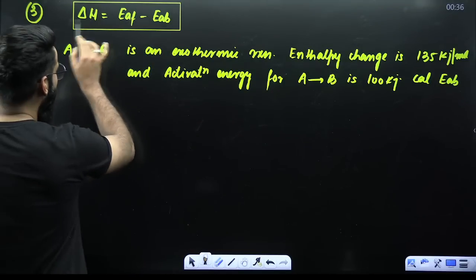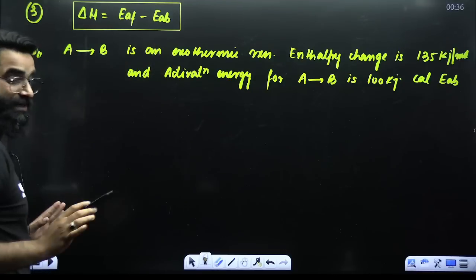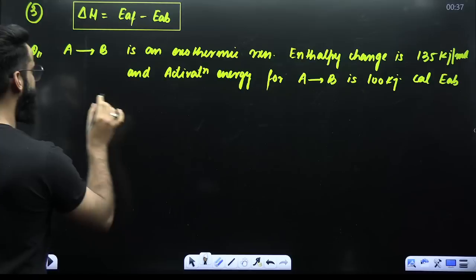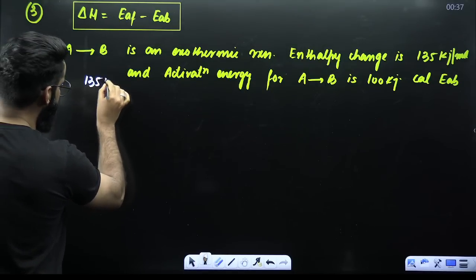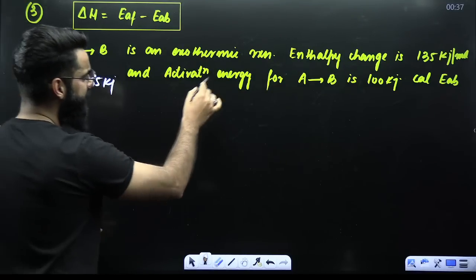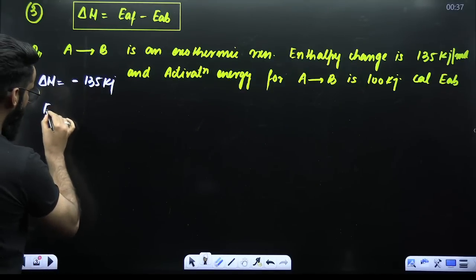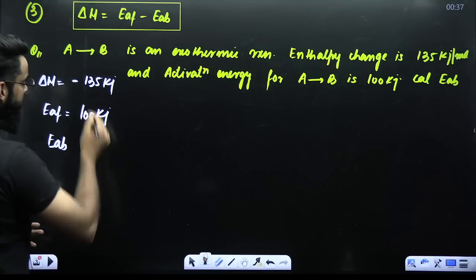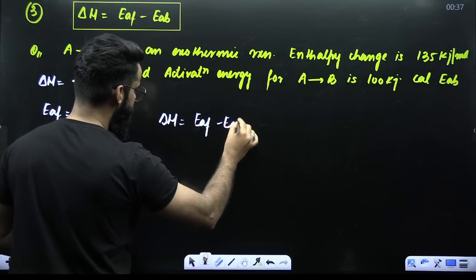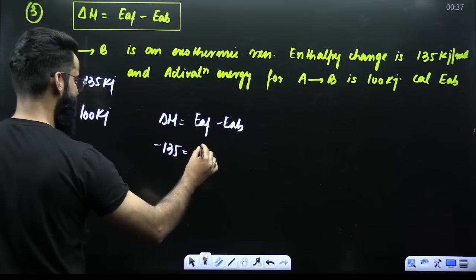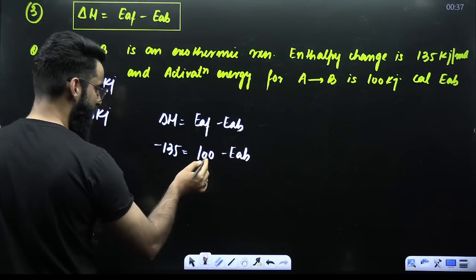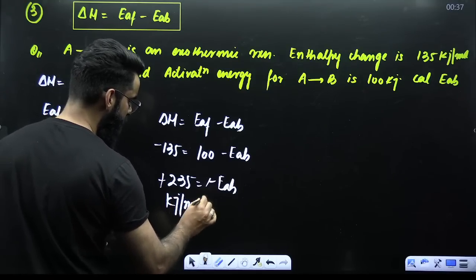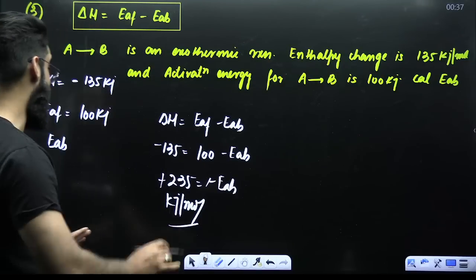Concept 3: enthalpy change is always equal to activation energy of forward reaction minus activation energy of backward reaction. For example, given an exothermic reaction with enthalpy change of 135 kilojoules — since exothermic, delta H is −135 kJ. Activation energy for conversion of A to B (forward reaction) is 100 kJ. Using delta H equals EAF minus EAB: −135 equals 100 minus EAB. Solving: EAB equals 235 kilojoules per mole.